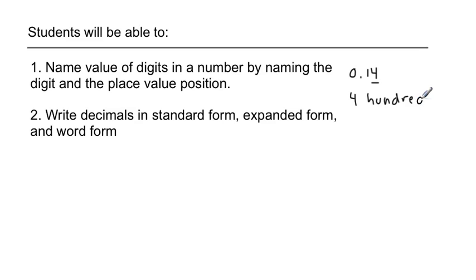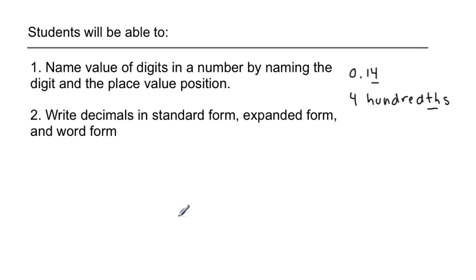That's 'hundred' with a 'th' on it. And that's it — name the digit and then the place value, and you have the value of the digit. I think that one's going to be something we can handle.